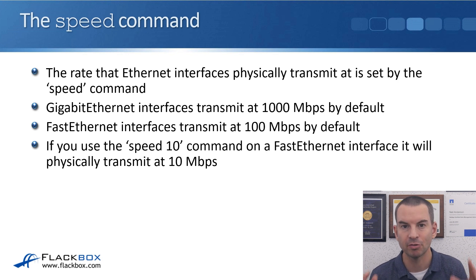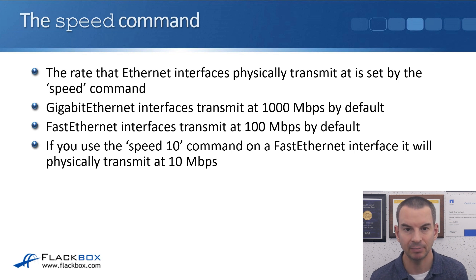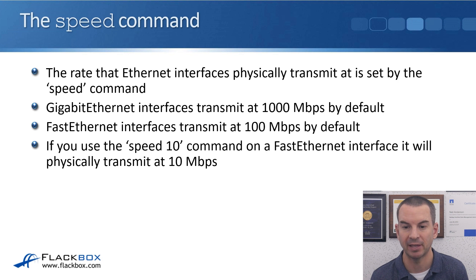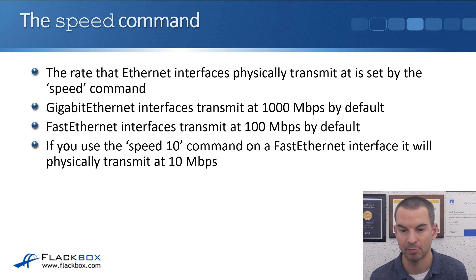Starting with the speed command first. The rate that Ethernet interfaces physically transmit at is set by the speed command. Gigabit Ethernet interfaces transmit at 1000 megabits per second by default — that is 1 gigabit per second. Fast Ethernet interfaces transmit at 100 megabits per second by default.